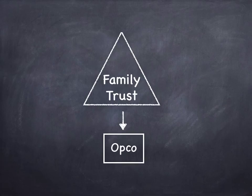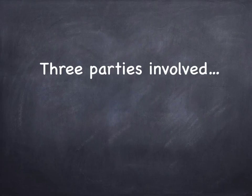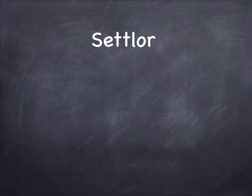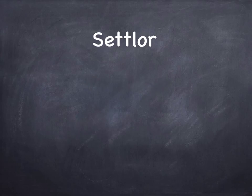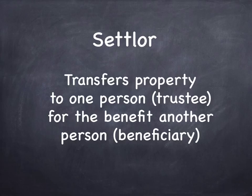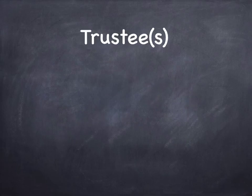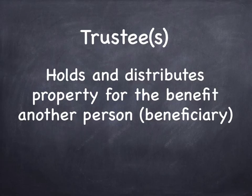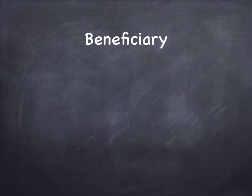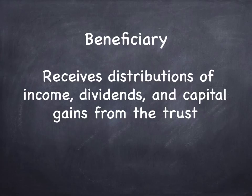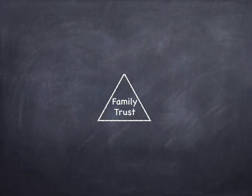In this structure, the family trust owns the opco, or the operating company. Now the three parties involved in a trust: there's a settlor, trustees, and beneficiaries. The settlor transfers property from one person — the trustee — for the benefit of another person, the beneficiary. The trustees hold and distribute the property for the benefit of the beneficiary. And the beneficiary is the one that receives the distributions of income, dividends, and capital gains from the trust.